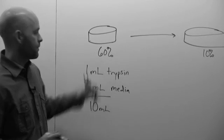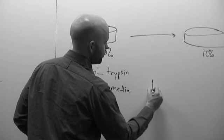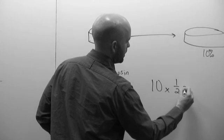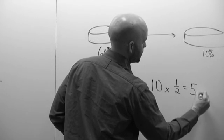So if we have 10 mils of a cell suspension, and we need to do a 1 to 2 split, that means we're going to take 5 mils, or half, of our cell suspension and add it to the 15 centimeter.